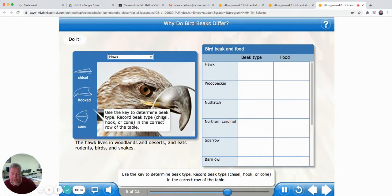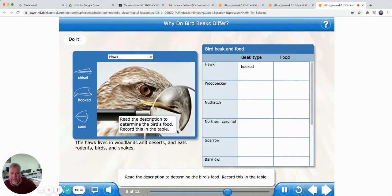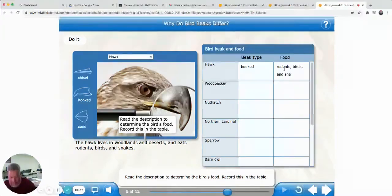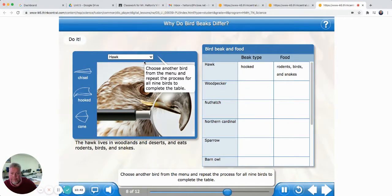Use the key to determine beak type. Record beak type, chisel, hook or cone in the correct row of the table. All right, what do you see? I see a little hook at the end of this hawk's bill, don't you? Read the description to determine the bird's food. Record this in the table. So it eats rodents and birds and snakes.